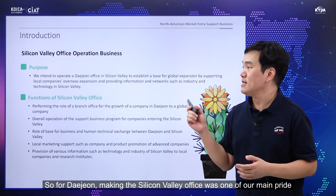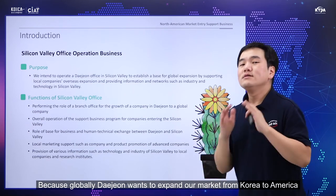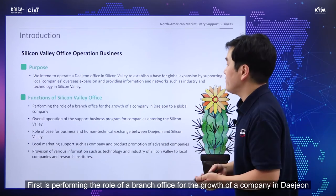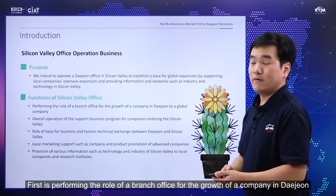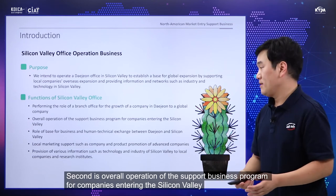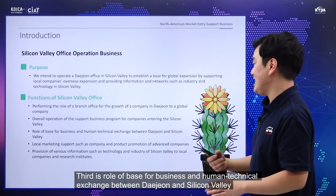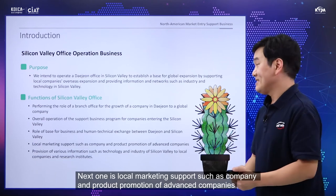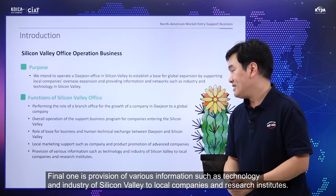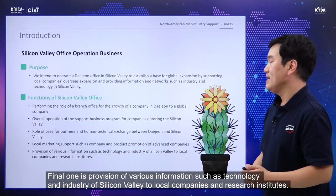Daejeon sees the Silicon Valley office as one of our main achievements, because globally, Daejeon wants to expand our market from Korea to America. The functions of Silicon Valley office include: performing the role of a branch office for Daejeon companies' growth; overall operation of support business programs for companies entering Silicon Valley; serving as a base for business and human-technical exchange between Daejeon and Silicon Valley; local marketing support such as company and product promotion; and providing information on Silicon Valley's technology and industry to local companies and research institutes.